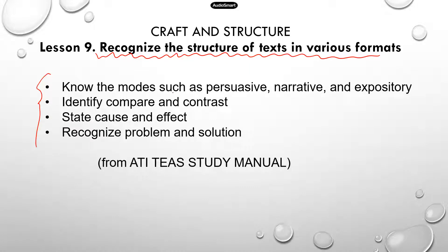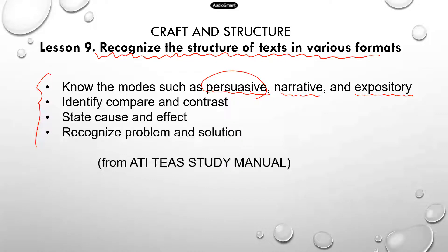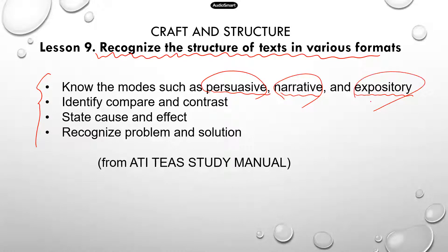You need to know the modes such as persuasive, narrative, and expository. Those are different types of passages. If it's persuasive, the writer is trying to argue about something — trying to convince you of his or her stance or position. Narrative describes an event, so it could be in a story format. And expository is where the writer is trying to explain something: some mechanism or a phenomenon.